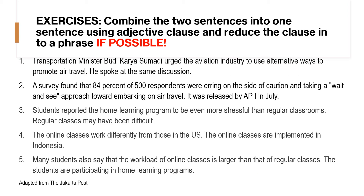Let's do an exercise. Combine the two sentences into one sentence using an adjective clause and reduce the clause into a phrase if possible. Number 1: 'Transportation Minister Budi Karyasumadi urged the aviation industry to use alternative ways to promote air travel. He spoke at the same discussion.' Number 2: 'A survey found that 80% of 500 respondents were erring on the side of caution and taking a wait-and-see approach toward embarking on air travel. It was released by AP1 in July.'